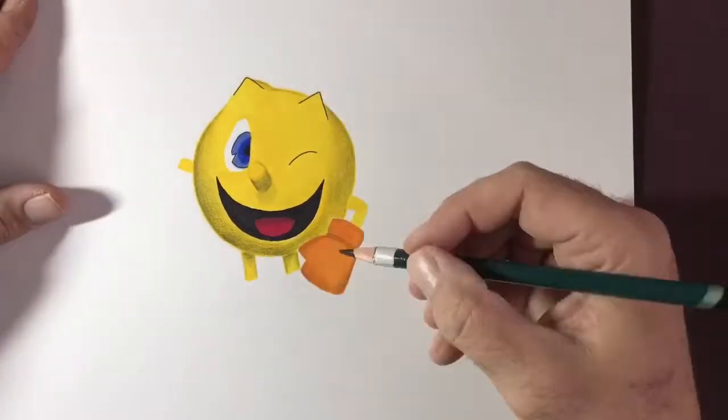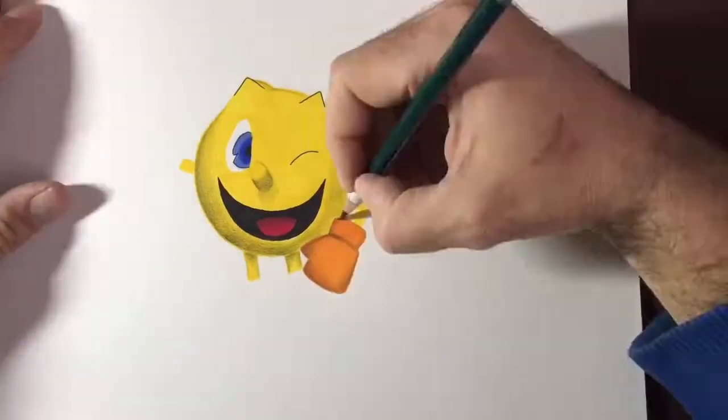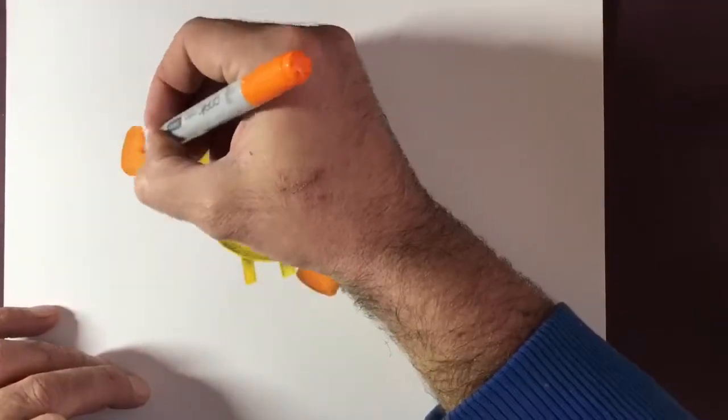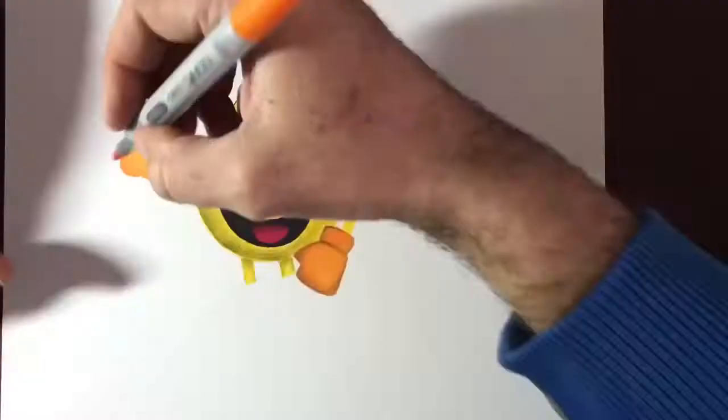I used a chrome orange for Pac-Man's boxing gloves that he has on, and then on his trainers, I used a cadmium red followed by a cool grey one.